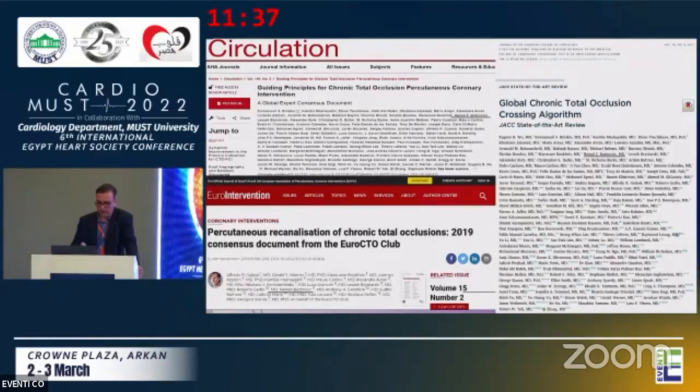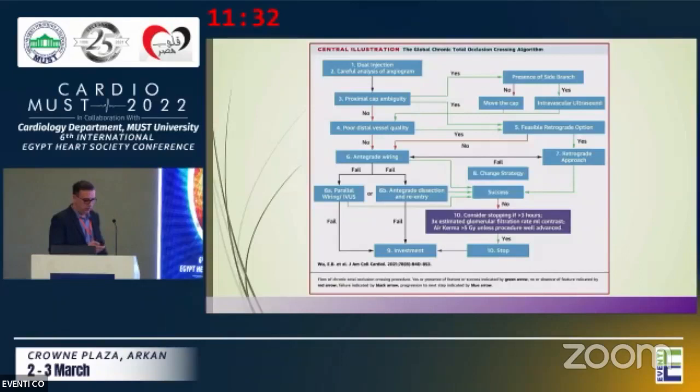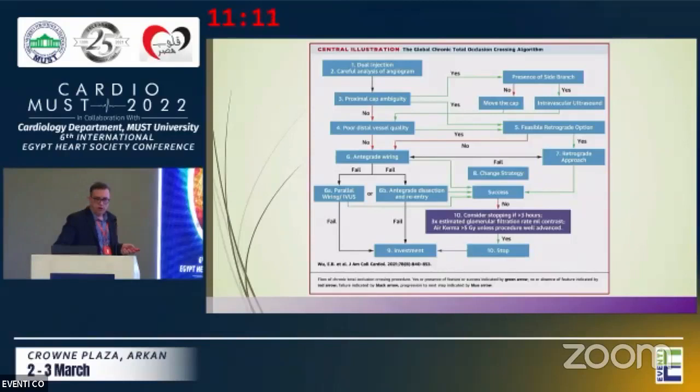If we look at this central illustration, we see the opportunities and possibilities to go antegrade through the CTO segment. But if we fail through this algorithm, we go to the retrograde approach — and for this retrograde approach, you must have a wire for externalization.